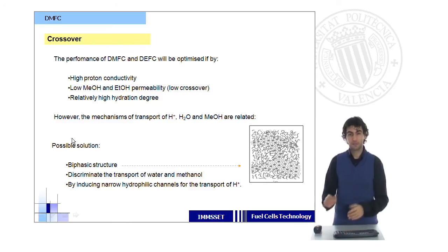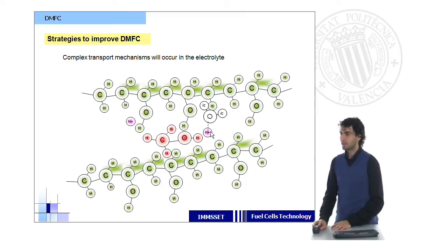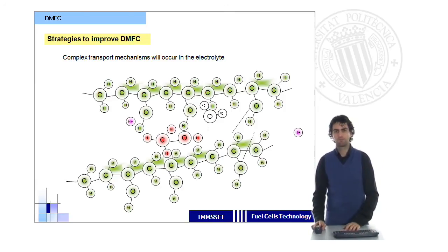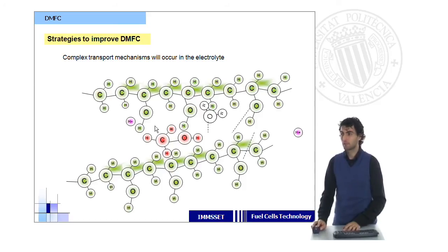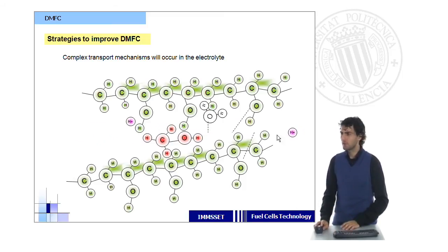And this is bad, because if methanol reacts at the cathode, what we will have is a reduction on the electricity that we obtain. So we really need to get rid of this crossover. So what should we do? Well, basically, we should try to discriminate the different processes for the transport of methanol and the protons. One of the most important transport mechanisms for proton conduction was the so-called vehicular mechanism. In that case, the proton was somehow driven by other molecules, like water or methanol, from one part to the other of the electrolyte. So that would be very bad for us, because, apart from transporting hydrogen, well, in this case, protons, sorry, we will be also transporting methanol molecules, and we don't want that.